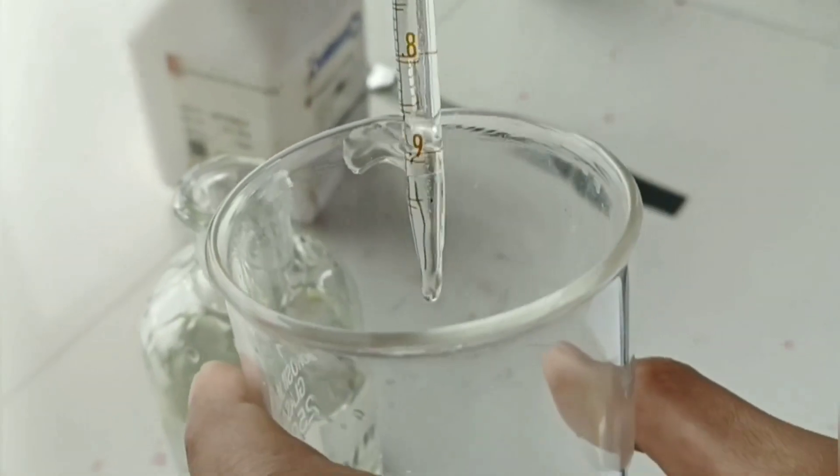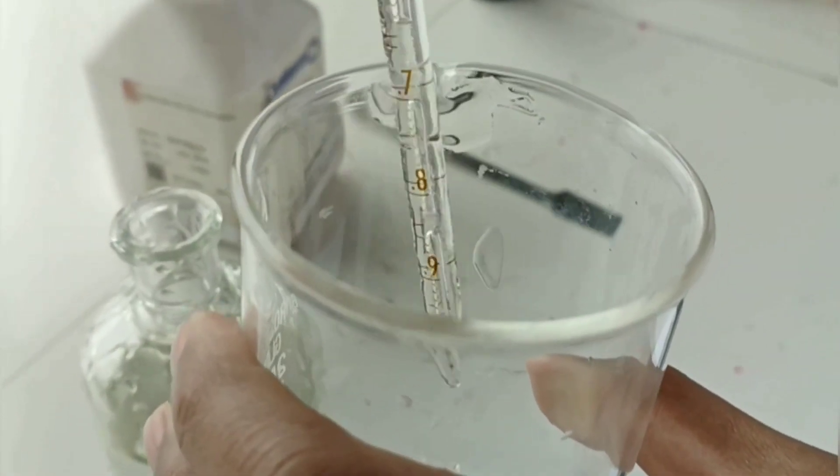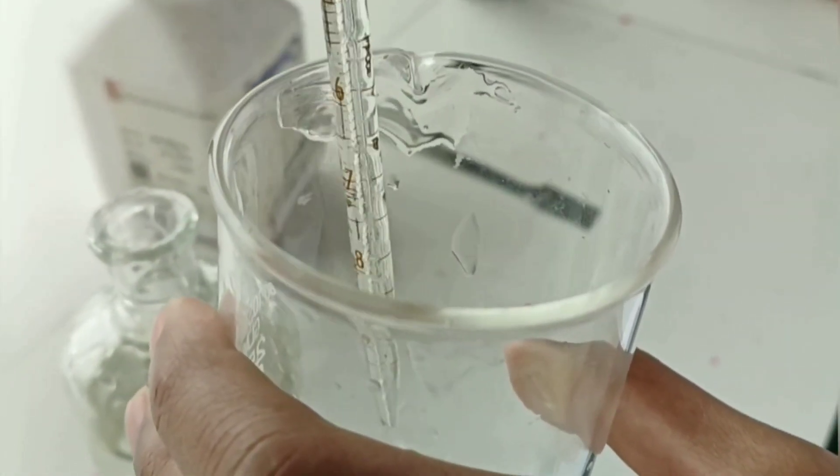First, we have to pipette out 0.2 ml of glycerin in a glass beaker. Now add 0.3 ml phenol in the glycerin.